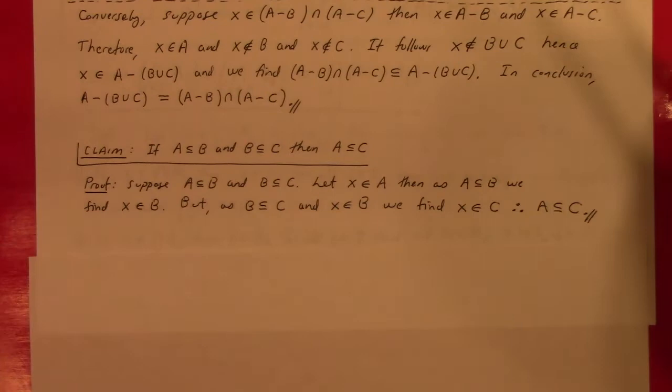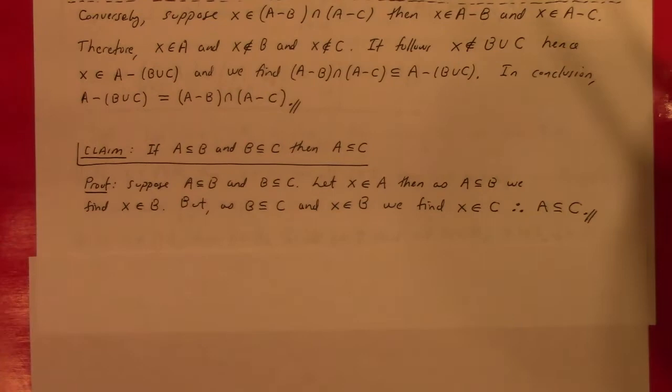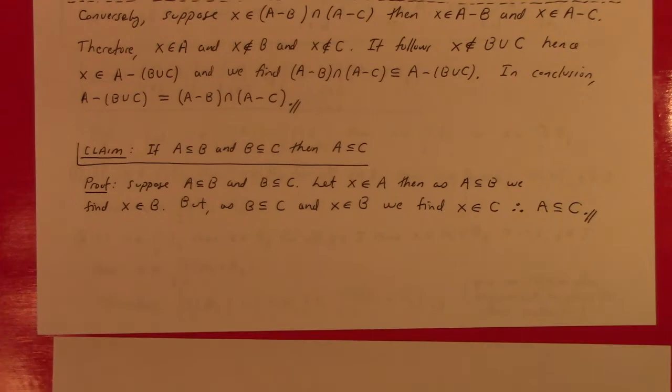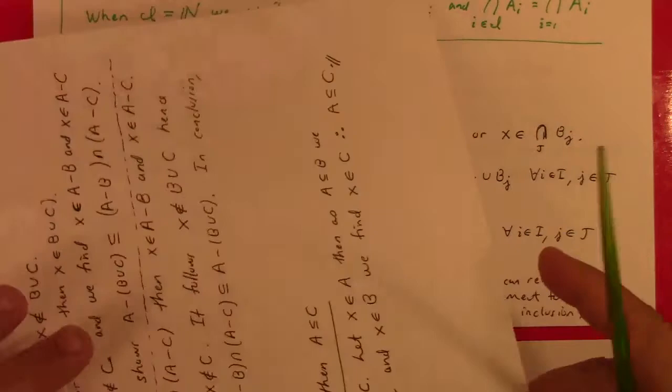To be fussy, I should have said at the start of these claims: let A, B, and C be sets. One fundamental error students make is conflating sets with their elements — we must distinguish between sets and the elements which are in the sets, as those are different levels of classification.